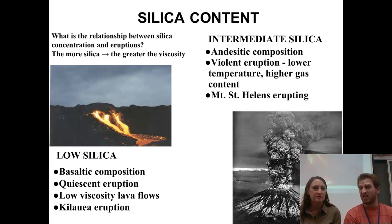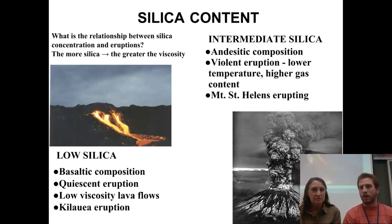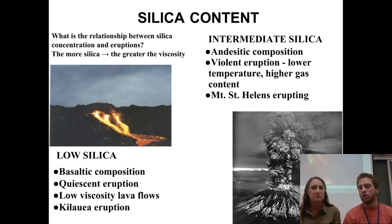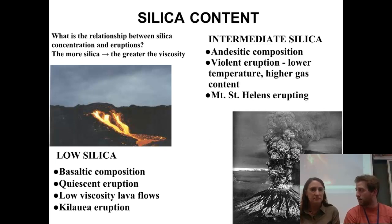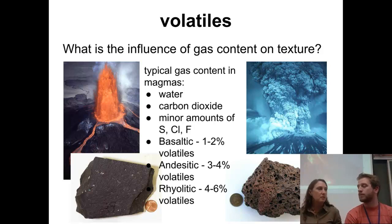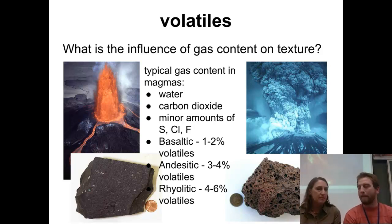With intermediate silica — a little bit more silica present — it's going to be andesitic, and this is where we get big violent eruptions. We've got lower temperatures, more gas is present, and the more gas we get, the more explosive the eruptions. Mount St. Helens in 1980 in Washington is one of the classic examples. A lot of the control over that explosive nature comes from the amount of volatiles dissolved in that magma.